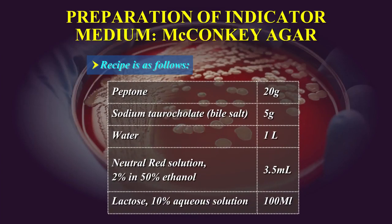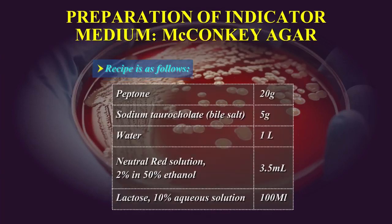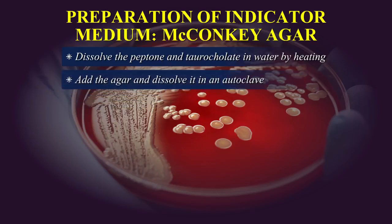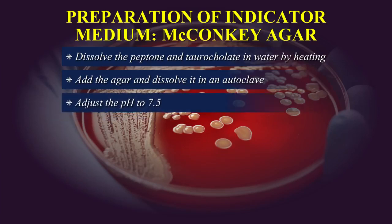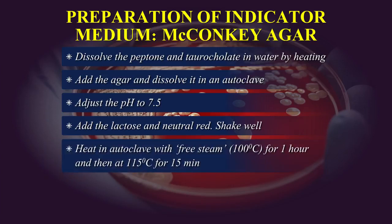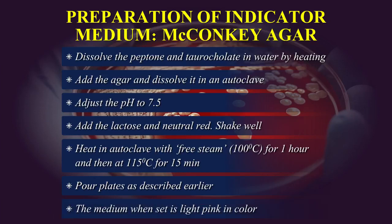McConkey medium recipe: Peptone 20 g, sodium taurocholate 5 g, water 1 litre, neutral red solution 2% in 50% ethanol 3.5 ml, lactose 10% aqueous solution 100 ml. Dissolve the peptone and taurocholate in water by heating. Add the agar and dissolve it in an autoclave. Adjust the pH to 7.5. Add the lactose and neutral red and shake well. Heat in an autoclave with free steam at 100°C for 1 hour, then at 115°C for 15 minutes. Pour plates as described earlier. The medium when set is light pink in colour.